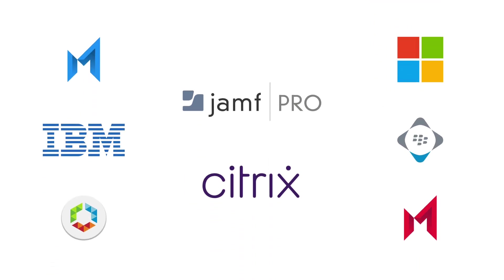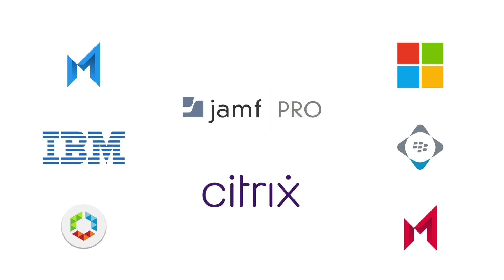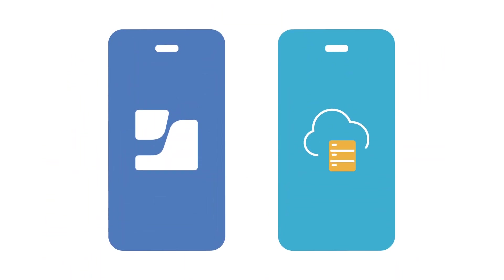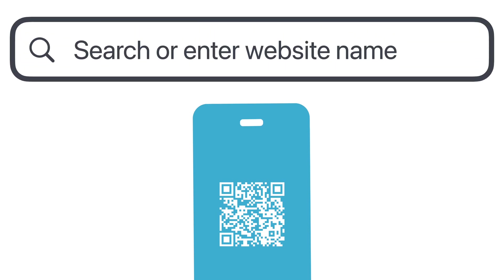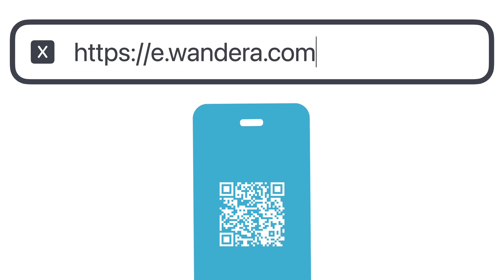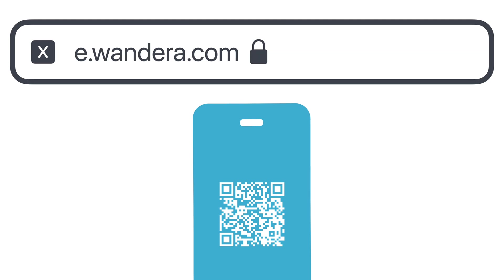Jamf Data Capping supports all of these UEMs. The second method of deployment is called user-initiated enrollment. User-initiated enrollment is utilized by organizations that do not currently use a UEM, or are choosing to not leverage it for their Jamf Data Capping deployment. Enrollment is done by administrators sending users either an enrollment URL or having them scan a QR code. In either case, users are going to be directed to install the Jamf Trust app and approve app permissions.